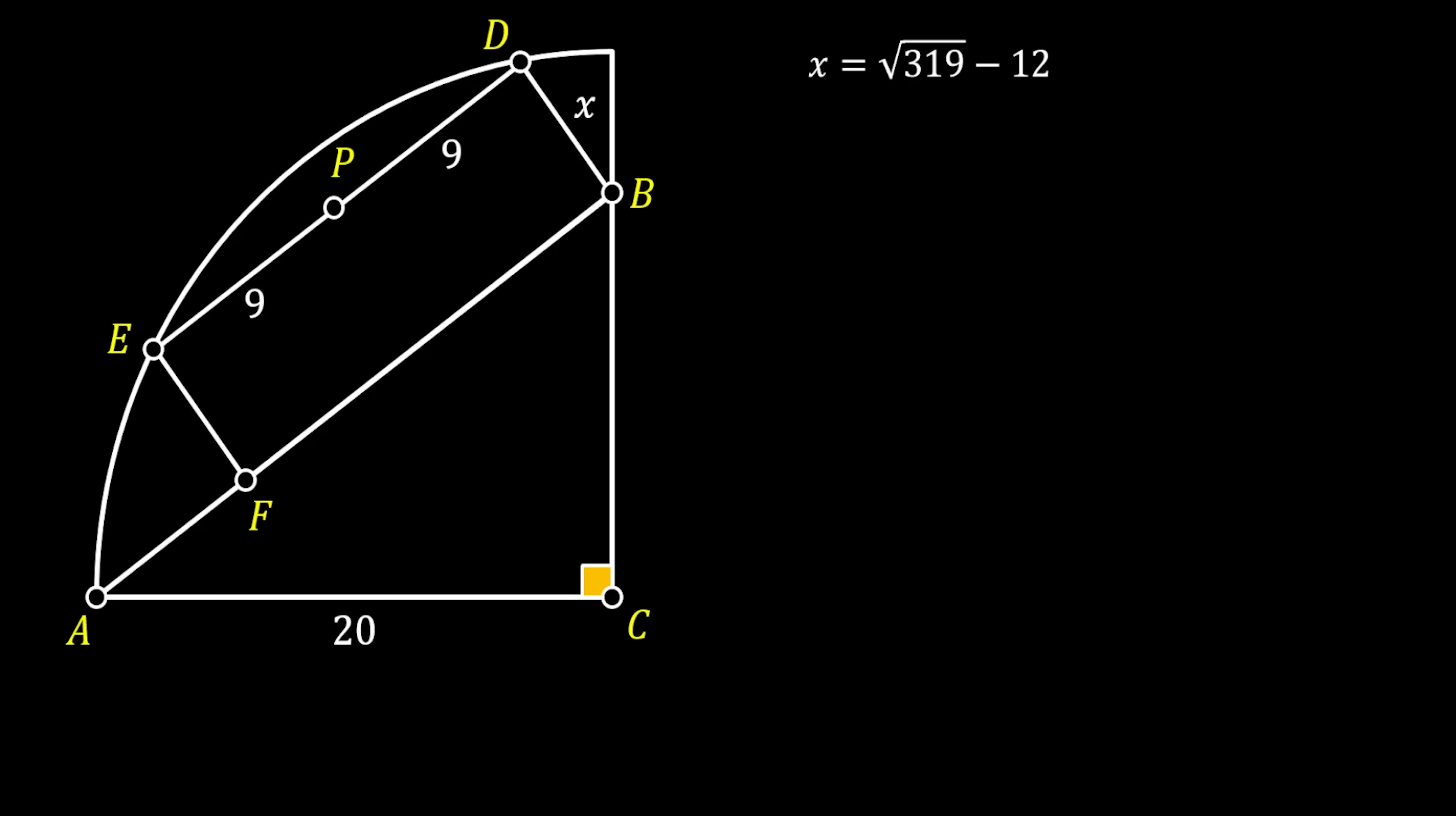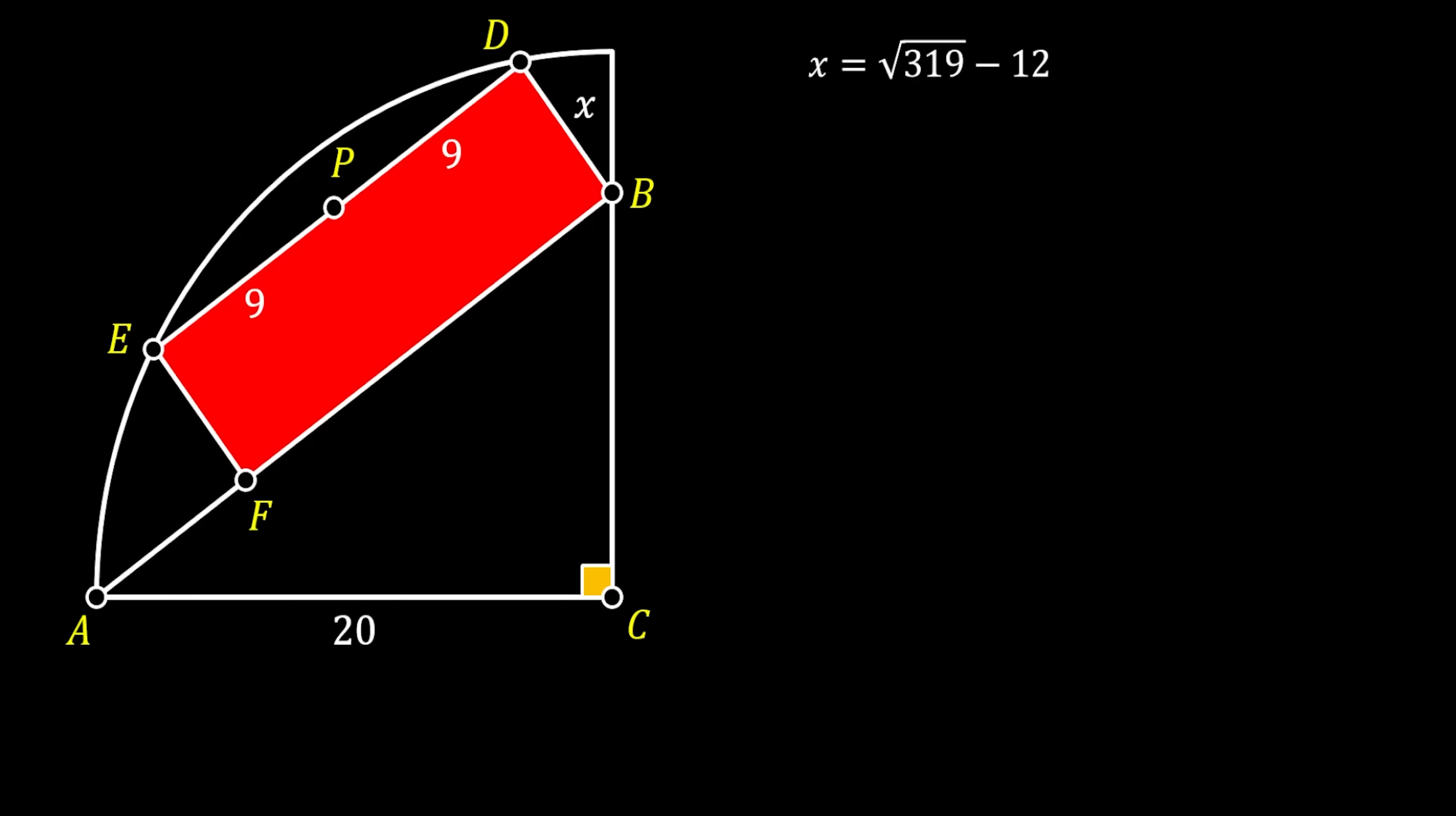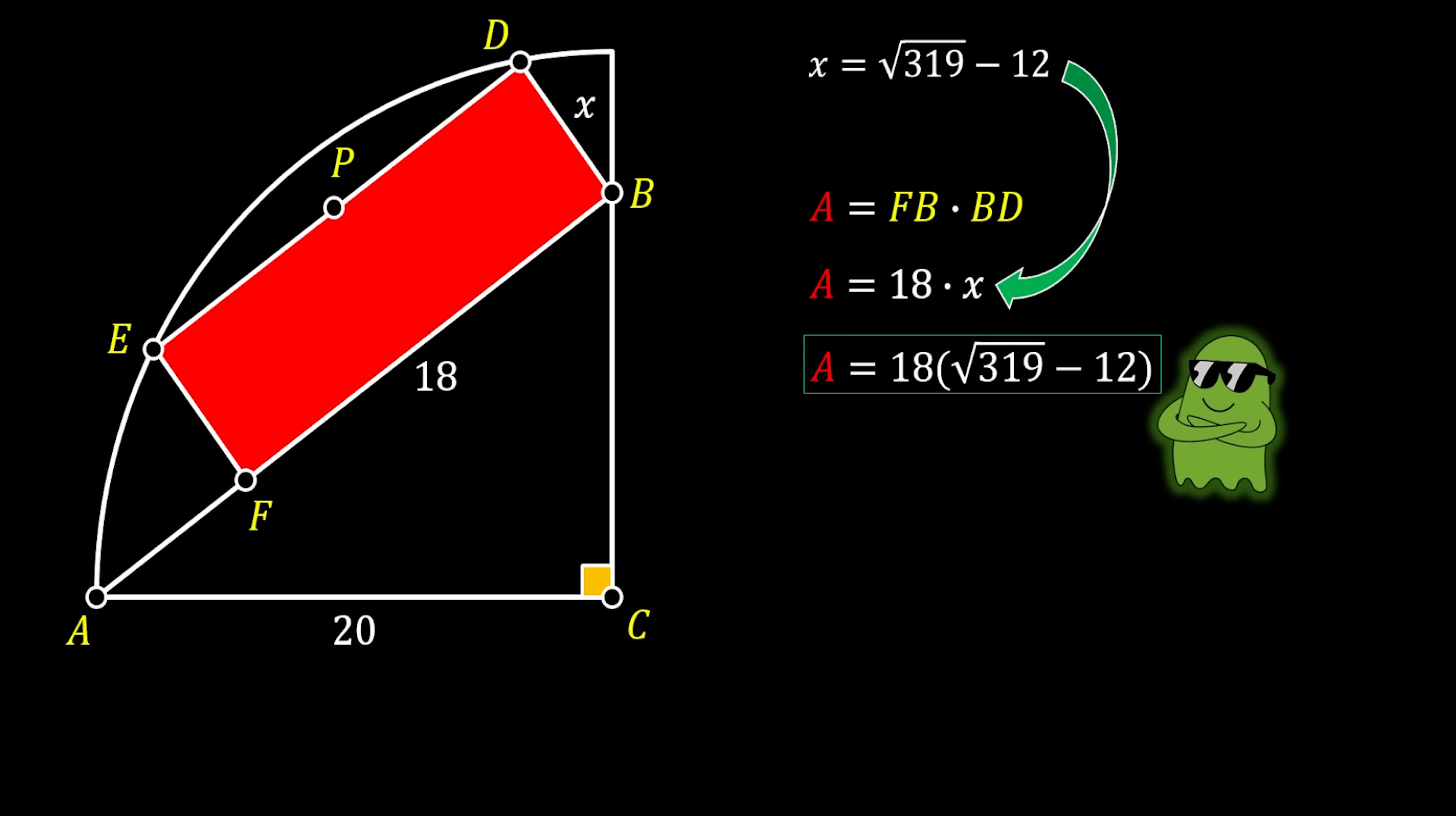Now, we can easily find the area of our rectangle as the product of its length and its height. So, since we know that the segments EP and PD are equal to 9, we can conclude that the length must be equal to 18 and we can substitute our values from the sketch. We can then, of course, substitute the value for x and we will finally get that the area of our red rectangle is equal to 18(√319 - 12) square units and this is our solution.